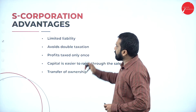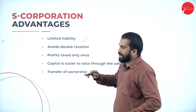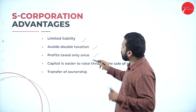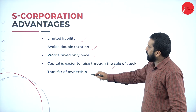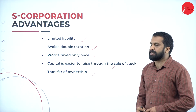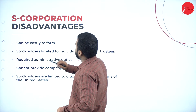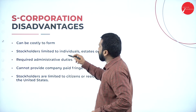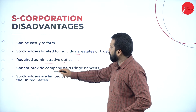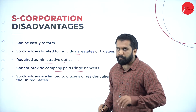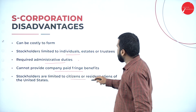Advantages of S corporation: limited liability, no double taxation — profits are taxed only once. Capital is easier to raise, and transfer of ownership is easy. Disadvantages: costly to form, stockholders are limited to individuals, required administration, cannot provide company-paid fringe benefits, and ownership is limited to citizens.